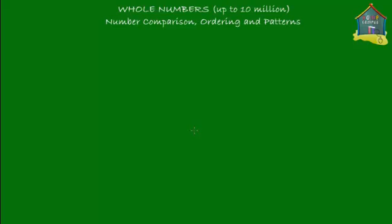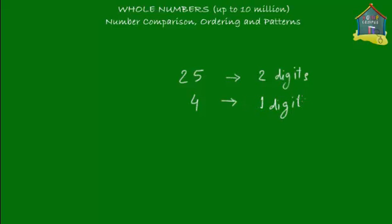Number comparison is pretty simple, so I'm not going to dig too deep into it. But we'll first try to understand how comparison happens — whether you do it mentally or using a pen and paper. There are a few steps that you go through. Let's say we have two small numbers like 25 and 4. The first thing you do is check how many digits each number has. 25 has two digits and 4 has one digit. Two is more than one, so 25 is greater than 4.